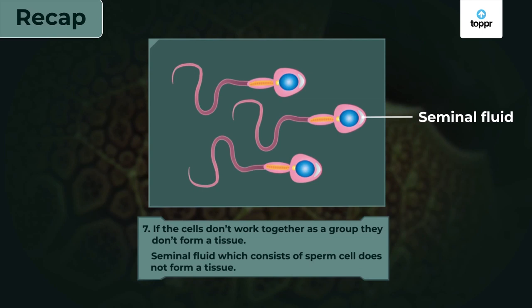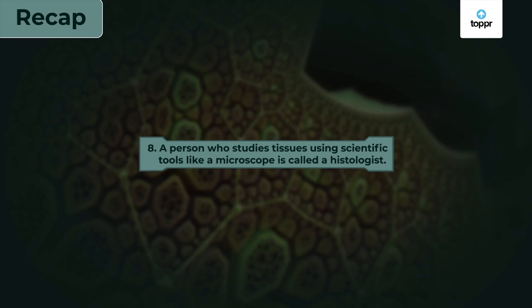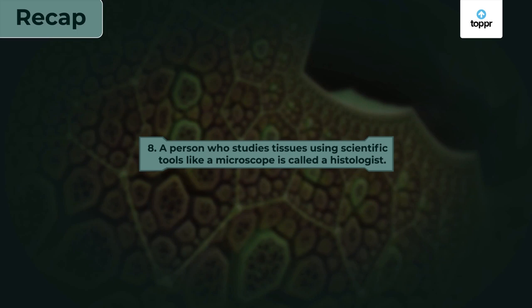All cells in a group may have the same function, but if they don't work together as a group, they don't form a tissue — for example, seminal fluid consisting of sperm cells does not form a tissue. A person who studies tissues using scientific tools like a microscope is called a histologist. Marie François Xavier Bichat was the first histologist and the father of histology, and he also coined the term 'tissues.' With that, we come to the end of this video — I hope you understand what tissues are and how they work in multicellular organisms.